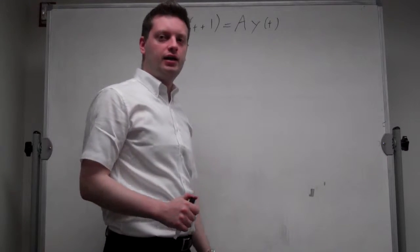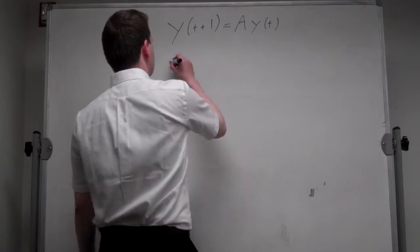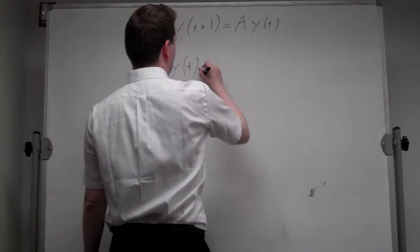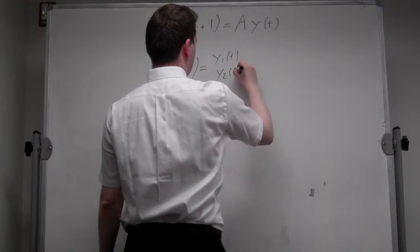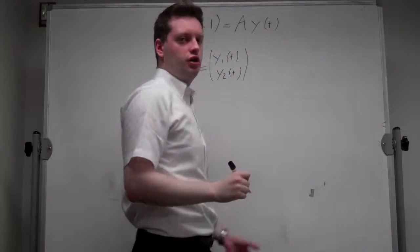Now, if you have a system like that, the general solution is y_t, which is equal to y_1t and y_2t, so a vector of individual variables,